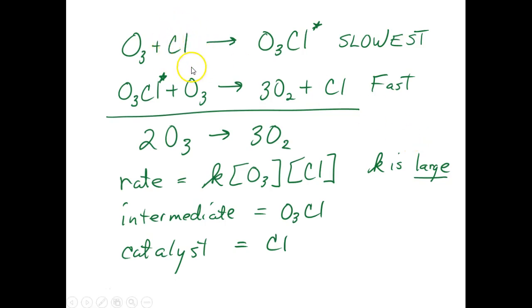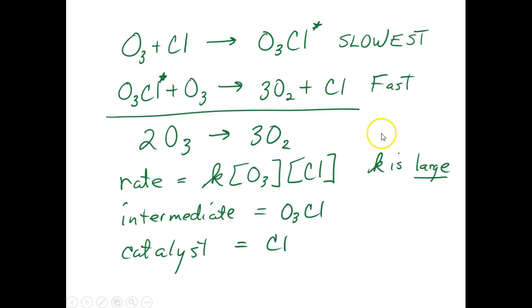Unfortunately, we've put a lot of chlorofluorocarbons into the atmosphere over the last 50 years, and these produce chlorine and fluorine atoms, which are fairly reactive. If a chlorine atom were to touch an O3 molecule, it'll react with it. The resulting species is even more unstable and will break down almost immediately. This catalyzed mechanism is much faster, and the rate depends on the concentration of O3 and on the concentration of the catalyst, Cl. It has a completely different mechanism, a reaction order of 2 instead of 1, and a much larger k value. The intermediate is O3Cl and the catalyst is Cl.